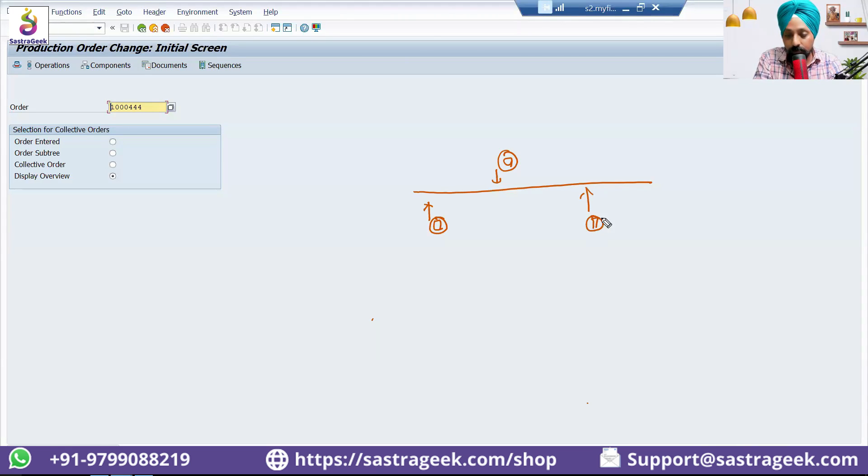Used means, when the assembly is happening, this material will be part of this assembly. This material will become a part of this assembly, which means the stock of this material should be reduced. Stock of this material should be reduced, because that is no more exist with me, I have consumed it.